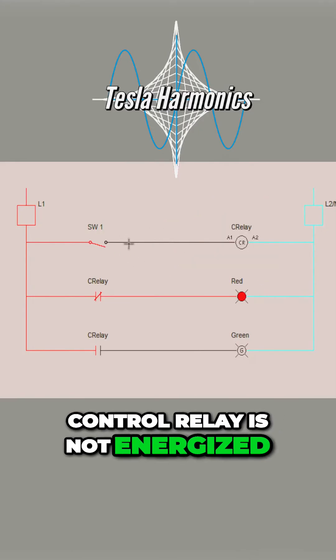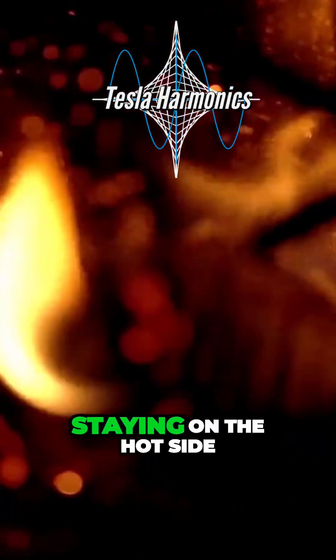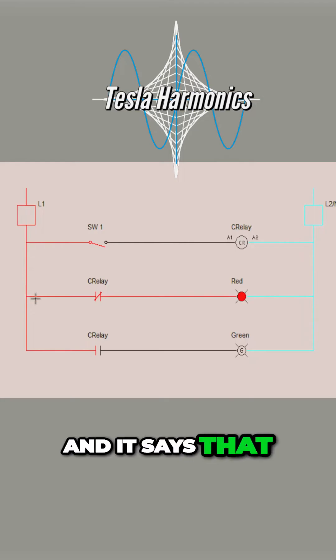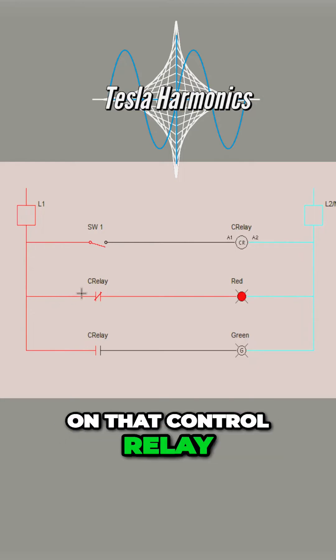So we know that control relay is not energized. Then coming back, staying on the hot side of line one coming in, we come down and we come to a normally closed contact on that control relay on one side.